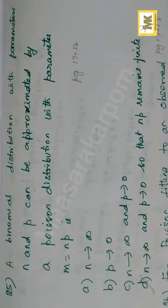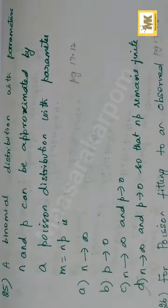A binomial distribution with parameters n and p can be approximated to Poisson distribution with parameter lambda equal to np. When n is large and p is very small - n tends to infinity, p tends to 0, and np is finite.